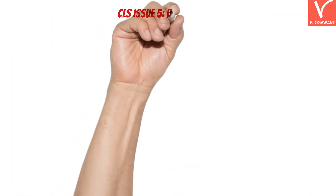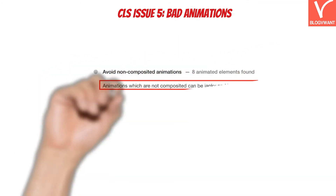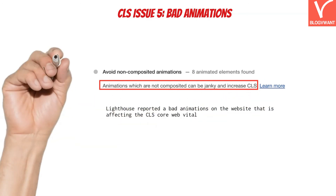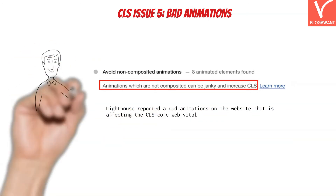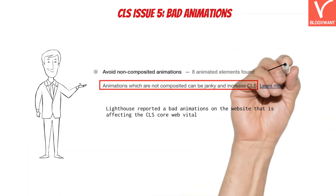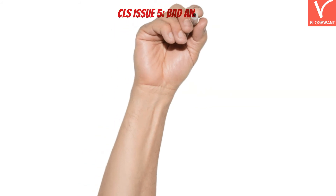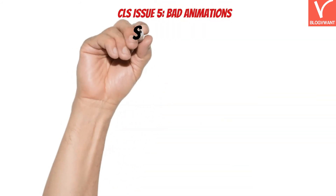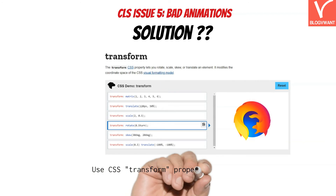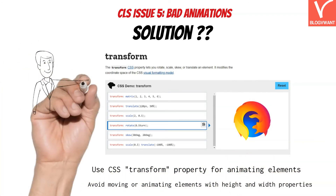The next CLS issue is bad animations. If animations shift content unexpectedly, both user experience and CLS score will be impacted. Google's CLS optimization guide states that animations should move naturally from one position to the next. The solution is simple: use the CSS transform property for animating elements. With the transform property, the layout won't shift at any cost. Avoid moving or animating elements by changing height and width properties.